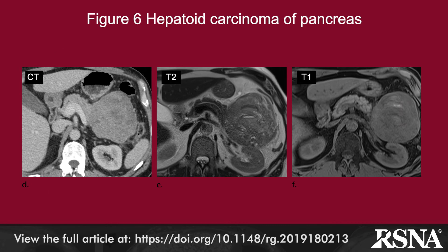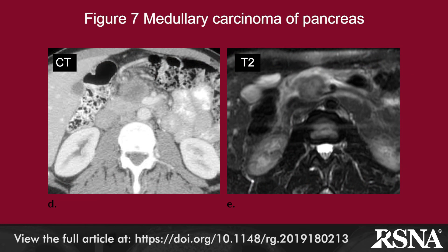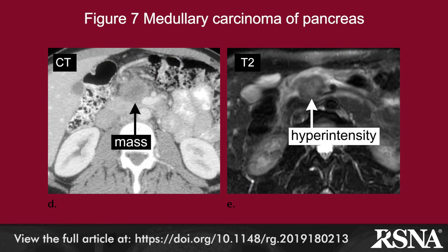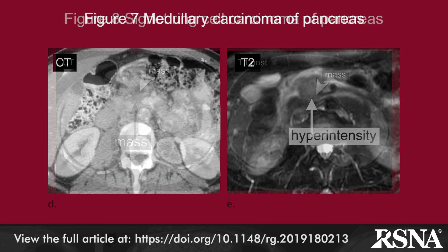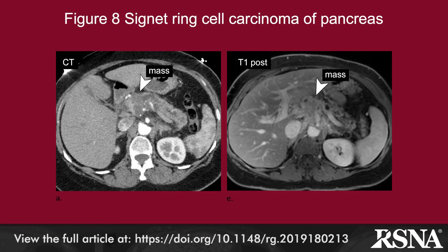Medullary carcinoma is likewise an extremely rare variant of pancreatic ductal adenocarcinoma, seen as a well-circumscribed mass with central hypoenhancement and T2 hyperintensity. Signet ring cell carcinoma is a variant of pancreatic ductal adenocarcinoma where 50% of the cells show large amounts of intracytoplasmic mucin, with an indented and peripherally displaced nucleus forming the characteristic signet ring configuration.